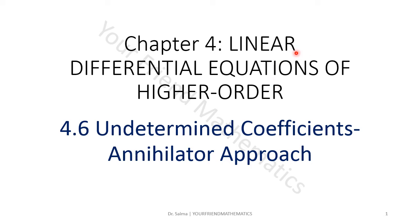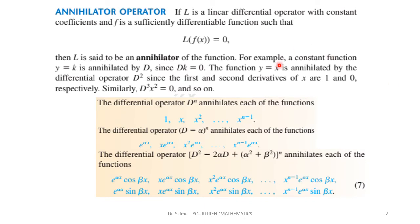Today's topic is 4.6 Undetermined Coefficients - Annihilator Approach from Chapter 4: Linear Differential Equations of Higher Order. We will revise the annihilator operator from section 4.5. If L is a linear differential operator with constant coefficients and f is a sufficiently differentiable function such that L of f(x) equals 0, then L is said to be an annihilator of the function.